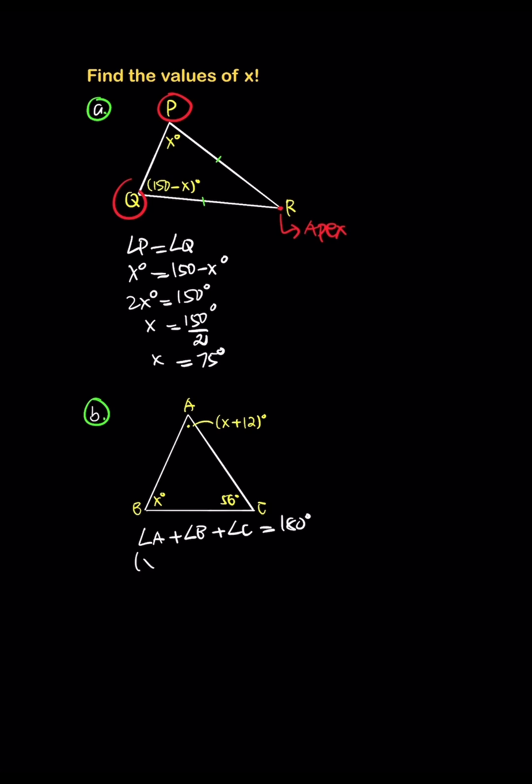Angle A is x plus 12, angle C is x plus 56, which equals 180. This gives us 2x plus 68 equals 180. Then 2x equals 180 minus 68, which is 112. So x equals 112 divided by 2, which is 56 degrees.